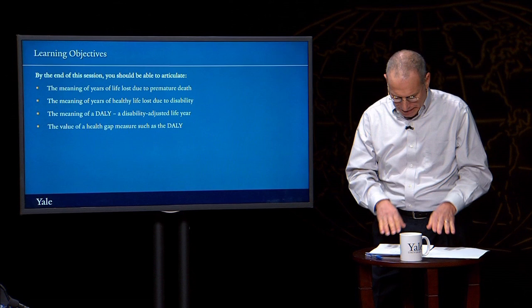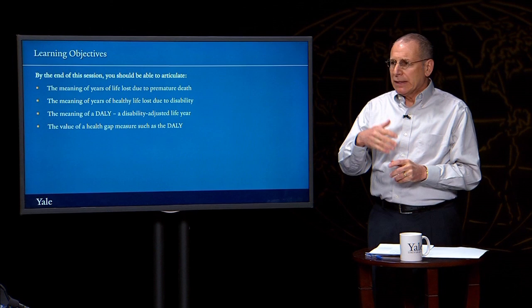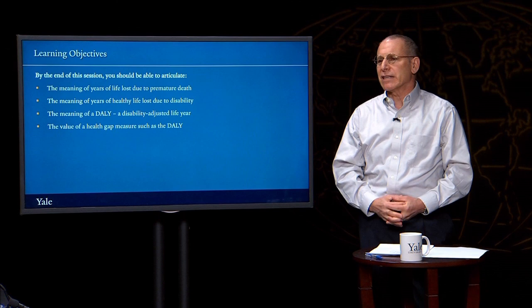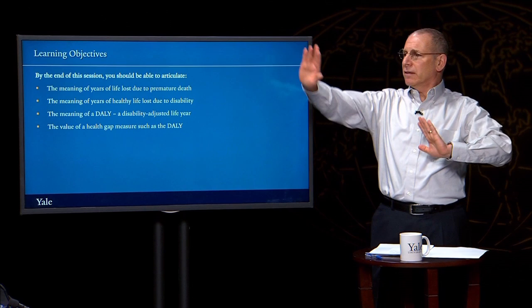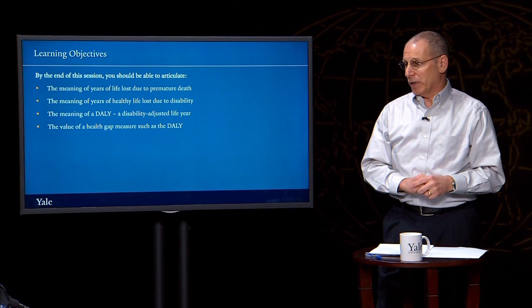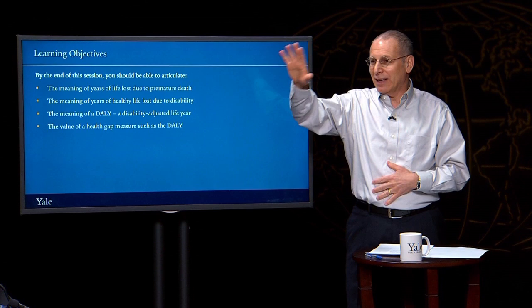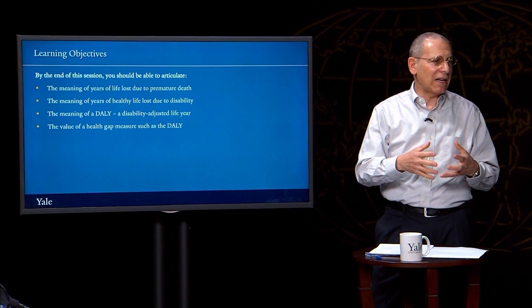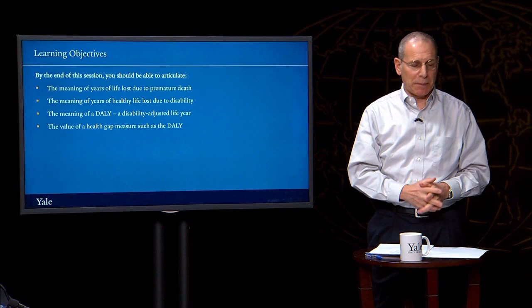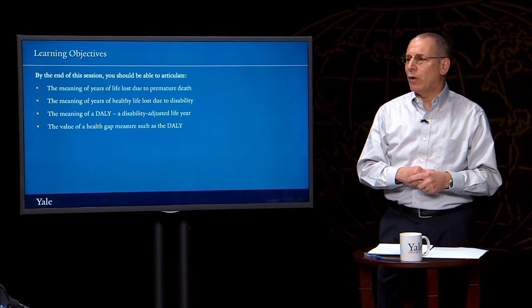To get a fix on this, let me probe the students a little bit. So Emily, what's the usual measure we use to gauge the health status of a population, including when we want to compare health status across populations? Life expectancy. Correct — life expectancy. The life expectancy in country X is 60, the life expectancy in country Y is 83, and therefore we understand that the country with a life expectancy of 83 has a much healthier population. But I want to suggest that the use of life expectancy as the main measure of health status is substantially flawed, and there are really valuable reasons why we might want to use instead a health gap measure like the DALY.